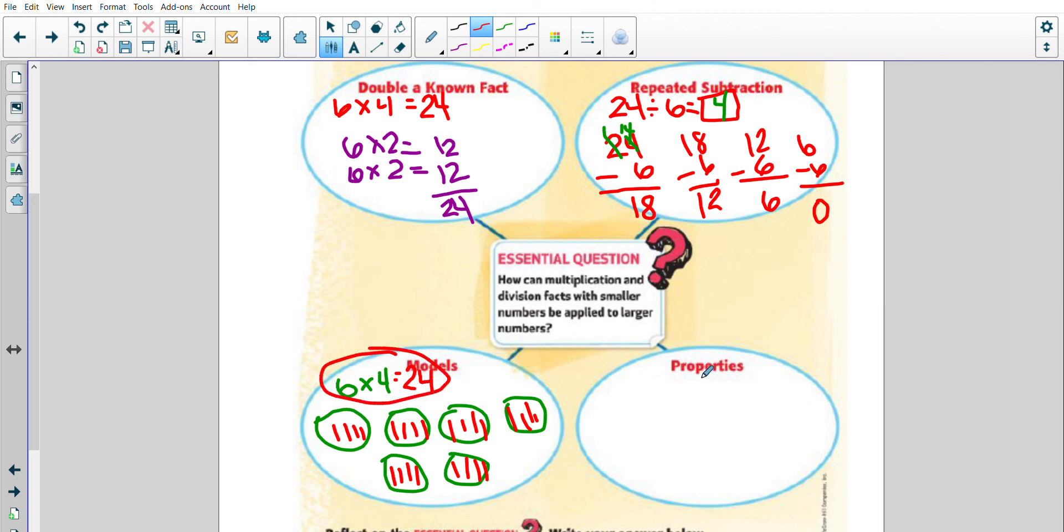Alright, and last one is property. Something like I could use the commutative property. That's just saying I can flip the order of my numbers to solve a problem. So if I don't know, if I'm looking at it 6×4, looking at this, I could think of four times six will give me the same answer. So 6×4 and 4×6. So 4×6 is 24, then I can determine that 6×4 is also 24.